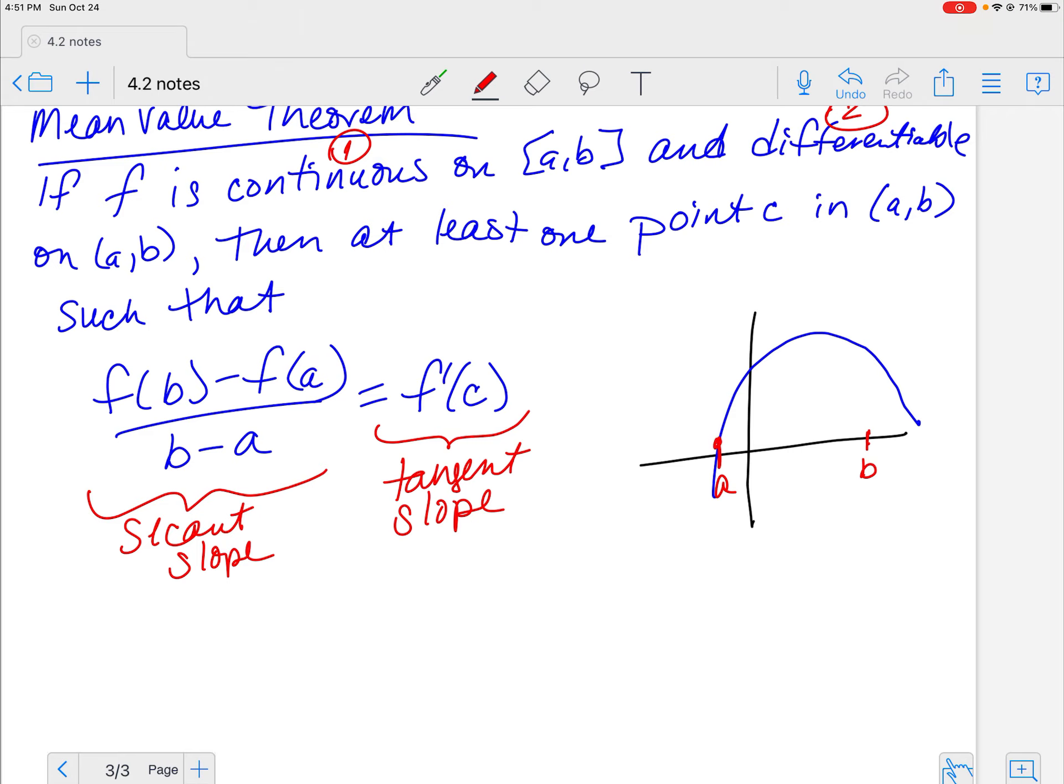So somewhere from A to B, I have this secant slope. So F of B minus F of A, right? There is some secant slope. And I'm saying that there is some point C where my tangent line is parallel to my secant line. Because anytime you have slopes that are equal, what does that mean? Parallel. So equal slopes is parallel. So I'm saying somewhere along here, if I have this secant slope, I have a tangent slope that equals it. That is the mean value theorem.